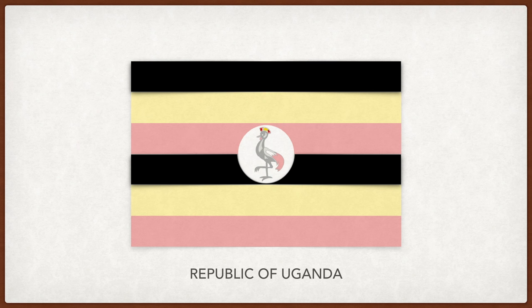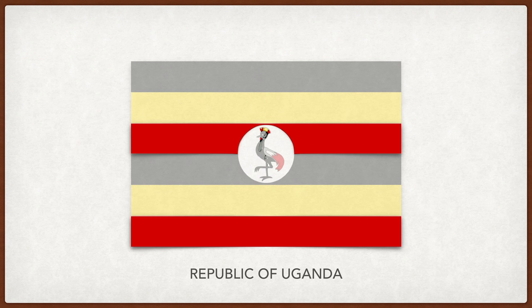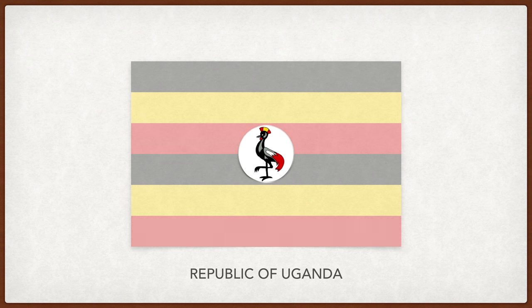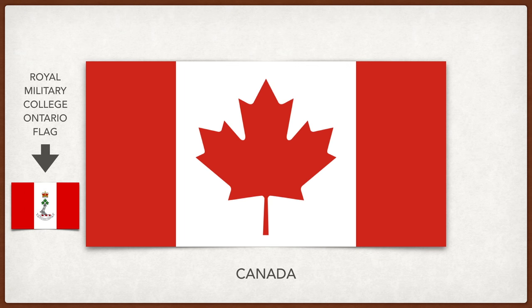Uganda. Black is for the African people, yellow is for African sunshine, and red for African blood, which connects all African people. In the middle, the great crowned crane, which is native to Uganda, has a leg raised to symbolize the forward movement of the country. Canada. The maple leaf is a symbol of national unity, distinct from the British. The red, white, and red pattern was inspired by the Royal Military College in Ontario.